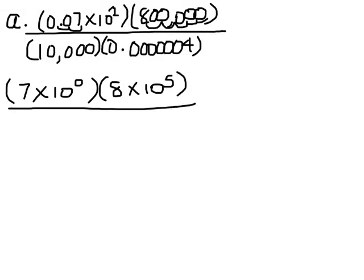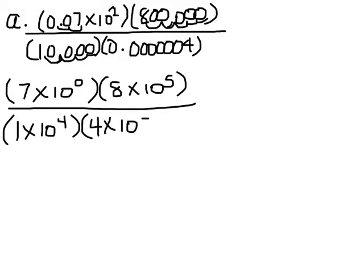On the bottom we're going to have 1 times 10 to the 1, 2, 3, 4th times 4 times 10 to the negative 1, 2, 3, 4, 5, 6, 7th — negative 7th.